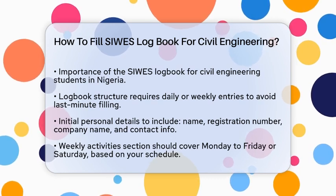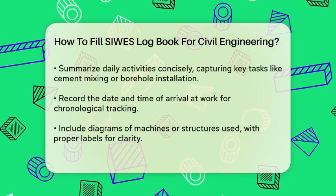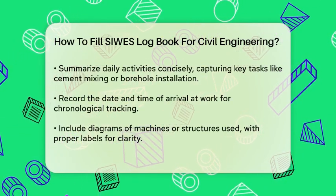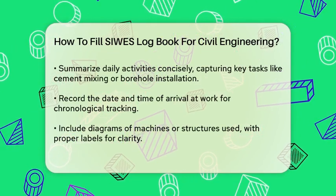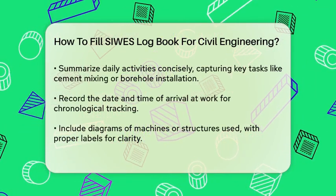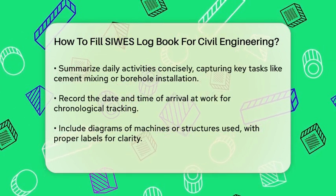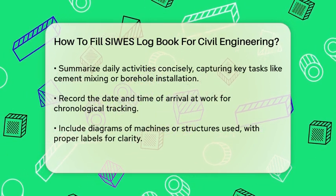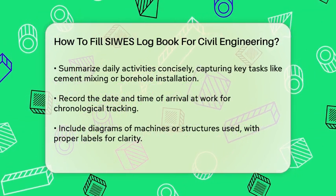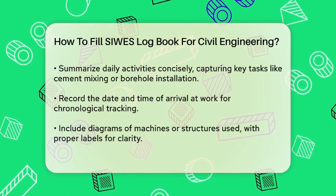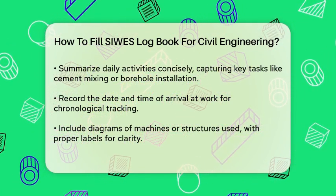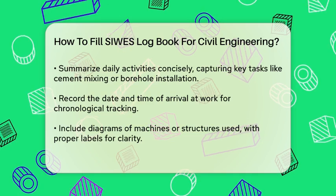Then move on to the weekly activities section. Here you'll have spaces for each day of the week, Monday to Friday or Saturday, depending on your work schedule. For each day, write a brief summary of what you did. For example, if you were involved in cement mixing, bonding, and laying blocks, note that down. If you worked on waterworks or learned about borehole installation, include those details as well. Keep it concise, but make sure to capture the main points of your activities.